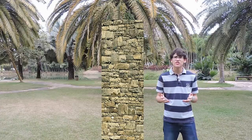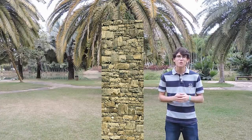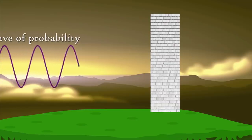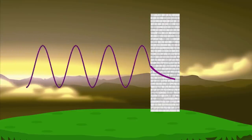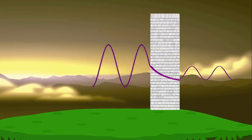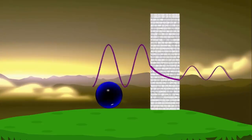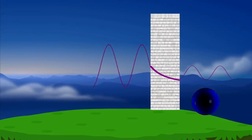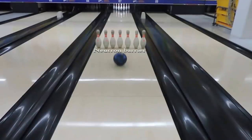Quantum tunneling allows an electron, for example, on the left side of a wall to be found on the right side. Is this a form of teleportation? Not really. The particle's wave of probability first has to travel through the wall and reach the other side. That is how an electron, initially here, can later be found there. So if our bowling ball switches sides, it has traveled the distance in between them.